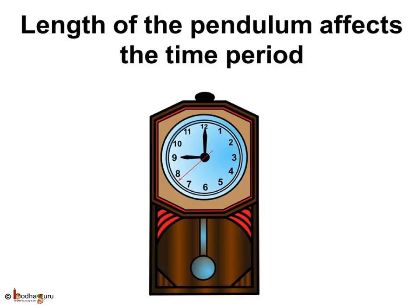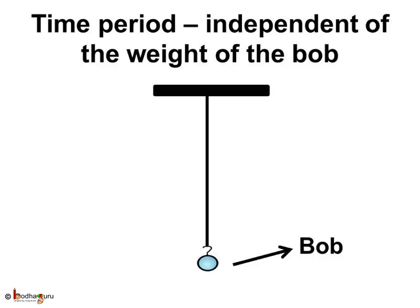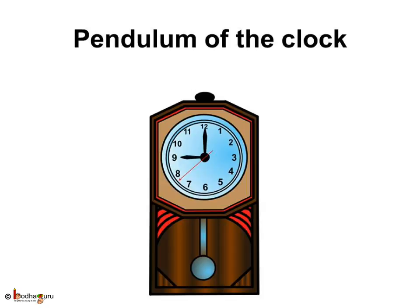The length of the pendulum determines its time period. So if the clock is running too fast or too slow, the length of the pendulum can be adjusted slightly. But the weight of the bob does not affect the time period.